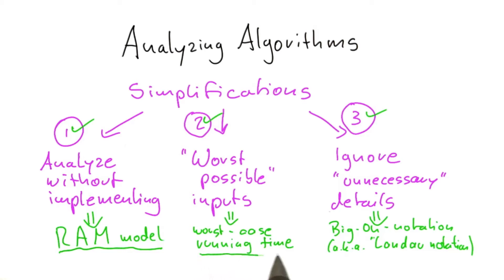The second one was the concept of worst-case running time, so only having to consider the worst possible inputs, not the best ones, not the average ones, but just really the bad ones. And finally, we introduced big O notation or Landau notation to be able to ignore all unnecessary details in algorithm analysis.